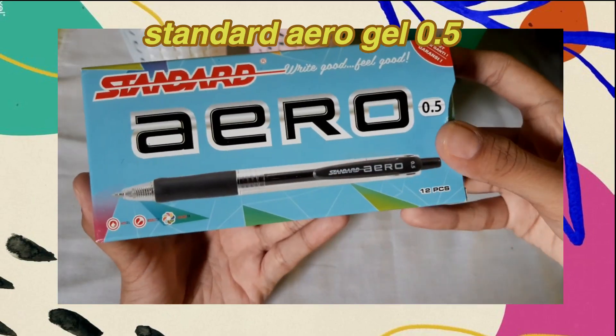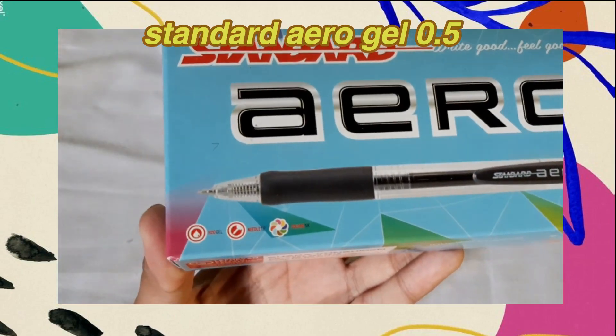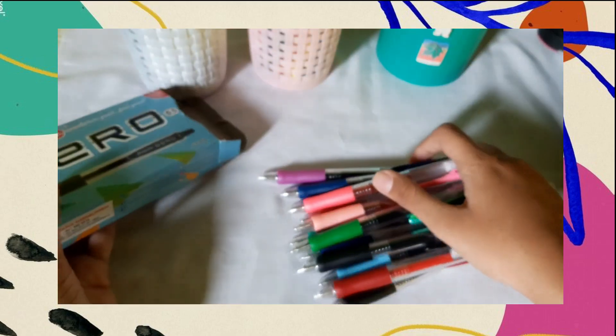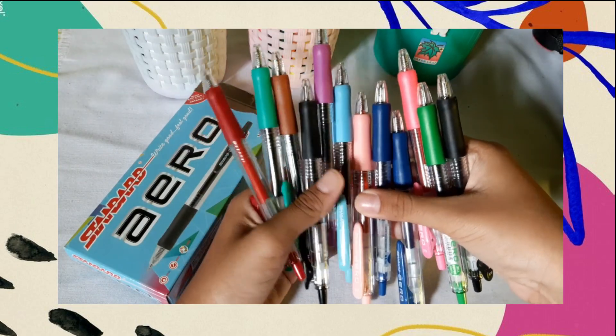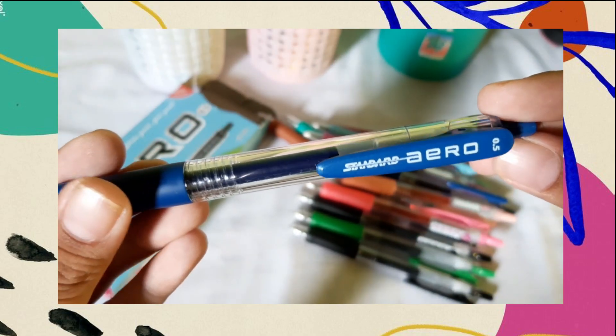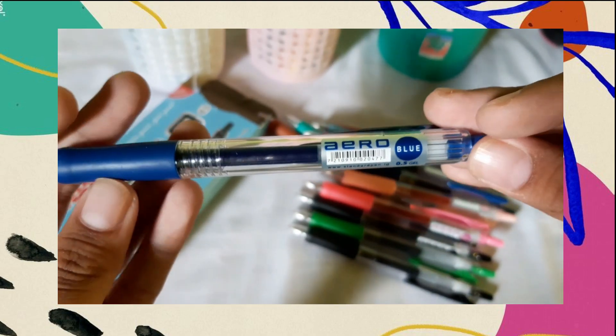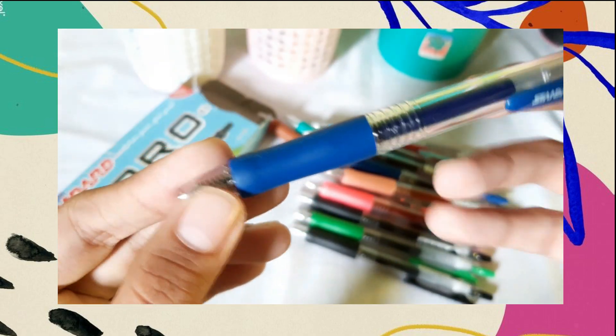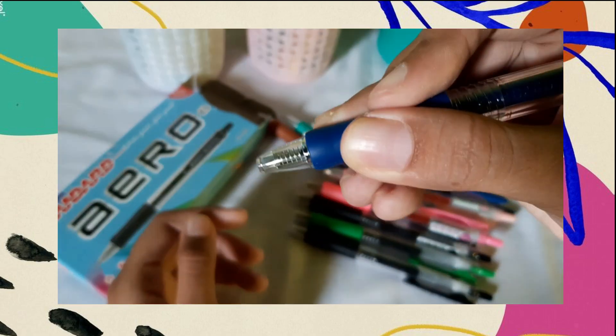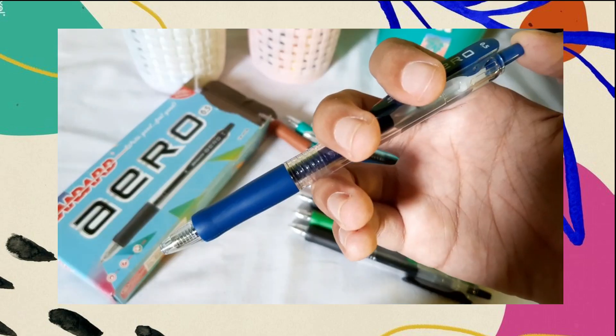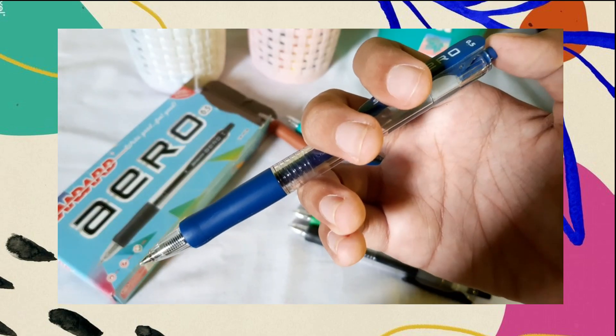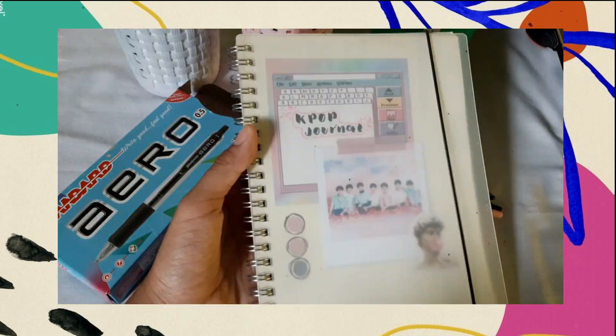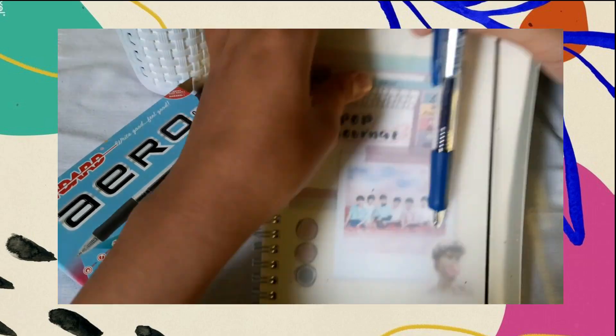Lanjut, ada Standard Aerogel 0.5. Sampai saat ini, ini tuh masih jadi pulpen favorit aku. Jadi ini adalah pen color yang ada 10 warna yang berbeda. Desainnya tuh ala-ala pulpen yang saat ini banyak digandrung di pasaran. Selain itu, dia juga ada grip karetnya yang empuk dan bikin nyaman banget buat nulis. Gak ketinggalan juga, pulpen ini tuh tipe retractable yang praktis banget. Oh iya, dia juga punya part yang bisa digunain buat nyangkutin ke buku kalian.